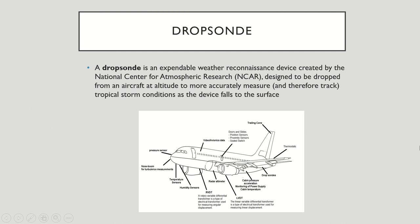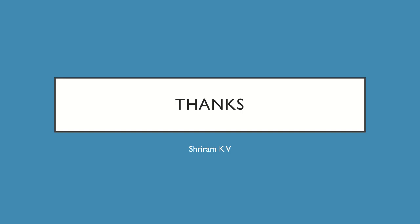Now, what is a dropsonde? It is a very interesting device. A dropsonde is an expendable weather device created by the National Center for Atmospheric Research (NCAR), designed to be dropped from an aircraft at altitude to more accurately measure tropical storm conditions. As the device falls to the surface, you get data to understand the storm and weather conditions. This is most importantly used when flying above the sea.